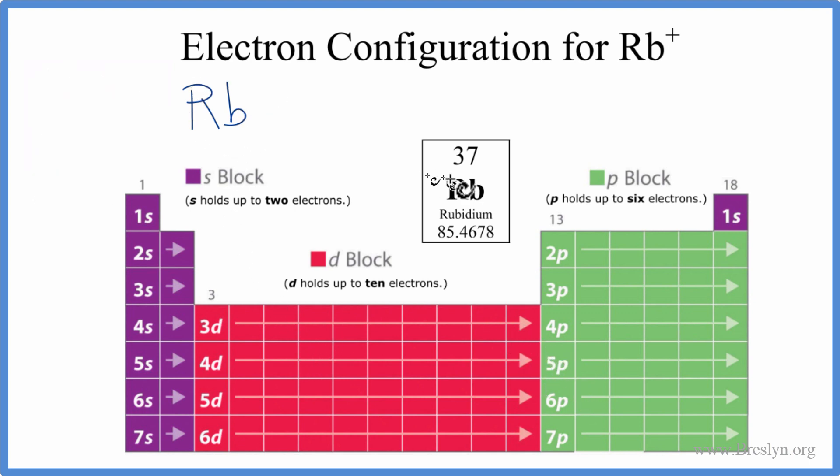We have rubidium, and we have 37 electrons. So we start with 1s, and s can hold up to 2. So we have 1s2, go across. We go to 2s, 2 electrons there. Skip over to 2p, which can hold up to 6. 2p6, so we've used 10 electrons. We have a total of 37, so we have ways to go. 2p, 3s, we'll put 2 in there. Then we go across to 3p6, now we've used 18.